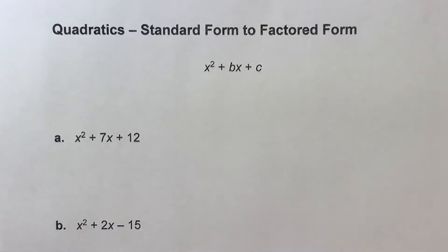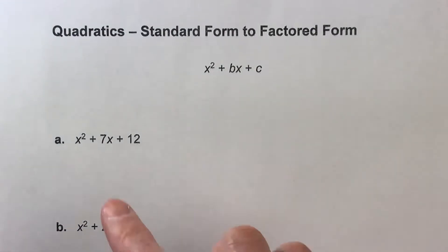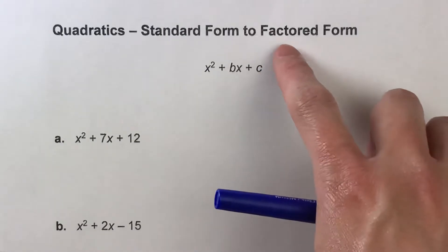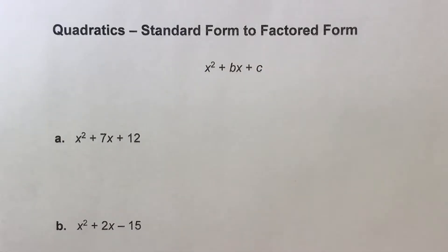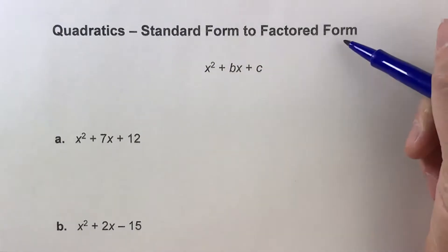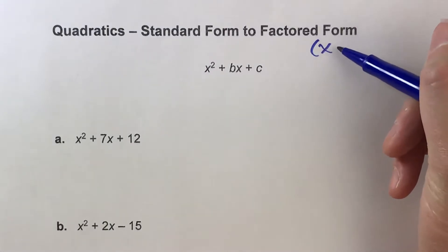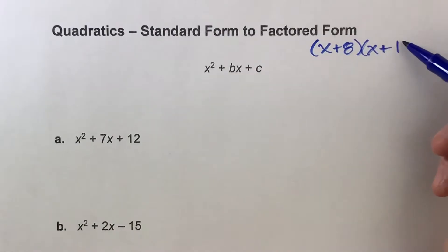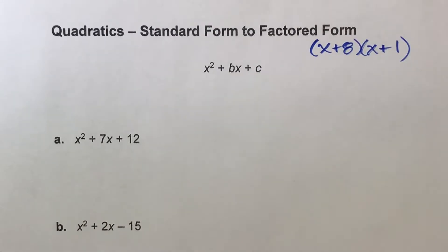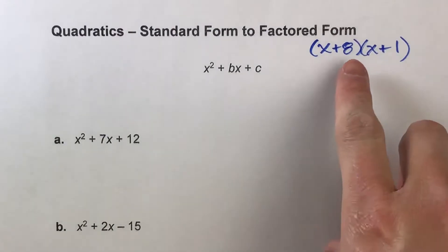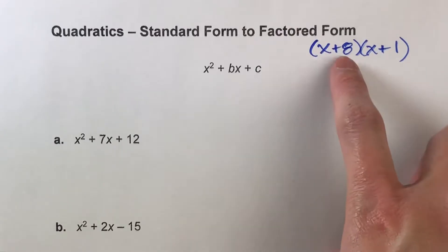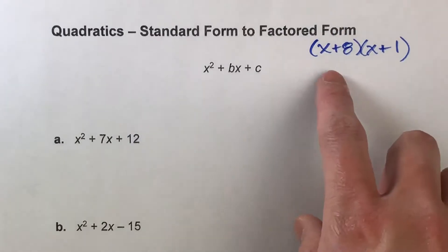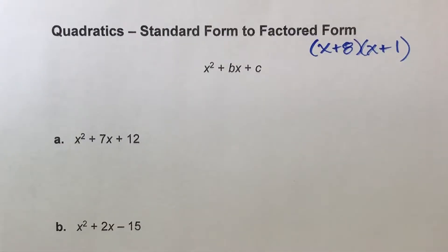Today we're taking quadratics written in standard form and getting them into factored form. Factored form looks something like this — for example, x plus 8 times x plus 1. It's called factored form because you have two things being multiplied together, and when you multiply two things together, each of them are called factors.